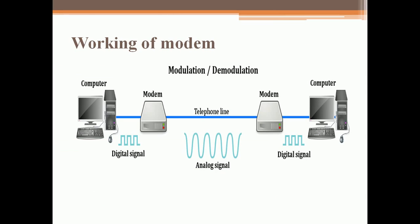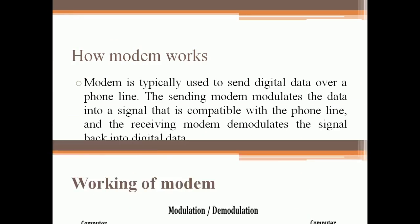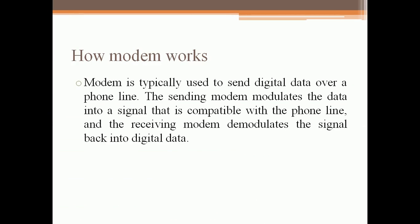Now we are going to discuss the working of modem. You can see in a diagram how an analog signal is converted into digital signal through telephone line. Modem is used to send digital data. The sending modem modulates the data and the receiving modem demodulates the signal back to the digital data. Simply a modem acts as a digital translator taking an information signal from your cable fiber or phone lines and making it accessible to your computer. So this is the whole working process of modem.